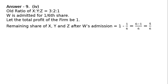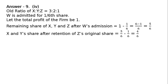Remaining share of X, Y and Z after W's admission is 1 minus 1/6. Out of the total share 1, if 1/6 was given to W, then remaining is 6 minus 1 upon 6, that is 5/6. According to the question, Z would retain his original share. Z's original share is 1/6. W takes 1/6 and what is left is 5/6. X and Y's share after retention of Z's original share: 5/6 minus 1/6 equals 4/6.